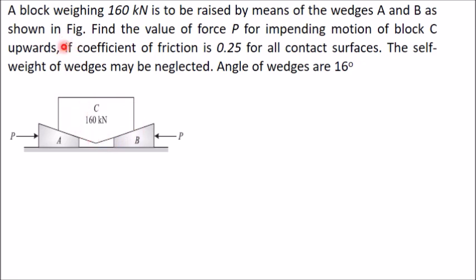In this problem, a load weighing 160 kilonewtons is raised by means of two wedges A and B, which are symmetrical. We need to find the value of force P for impending motion of block C upwards — that is, to raise block C in the upward direction.